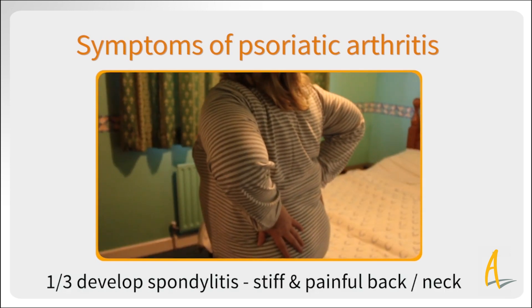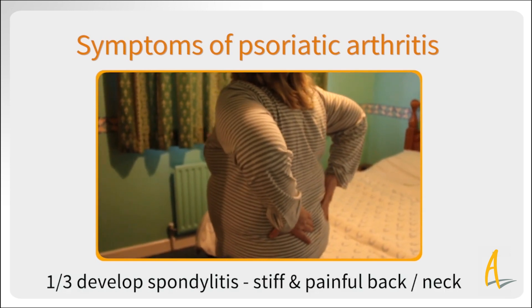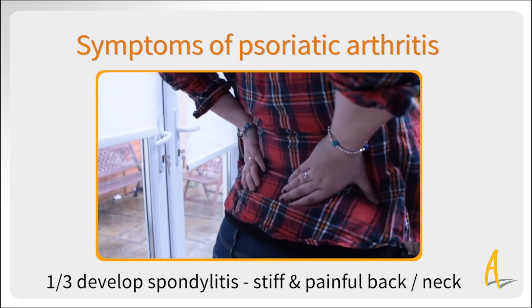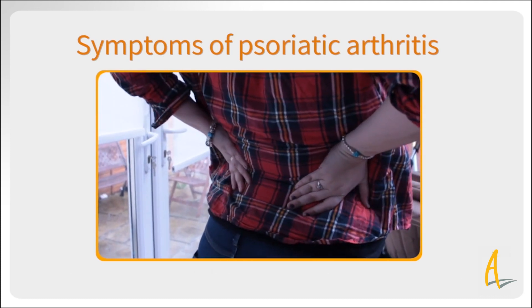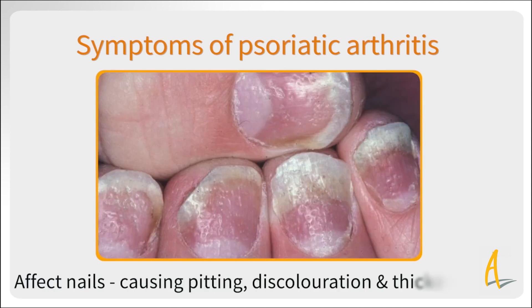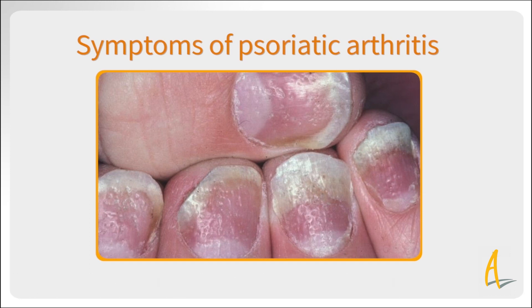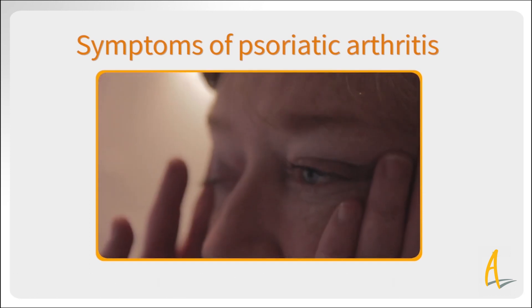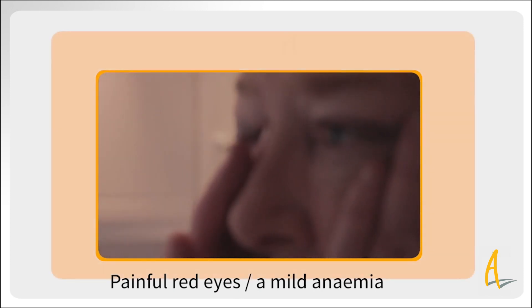About a third of people with psoriatic arthritis also develop spondylitis, which is a stiff and painful back or neck caused by inflammation in the spine. Psoriasis can affect your nails also, causing pitting, discolouration and thickening. Painful red eye or a mild anaemia can also occur when the disease is active.